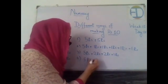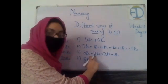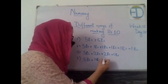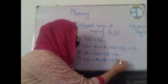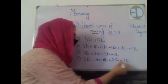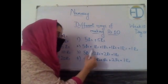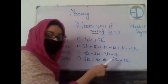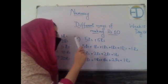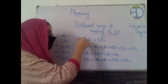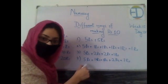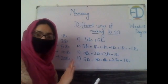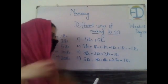The fourth combination: one coin of five rupees, one coin of two rupees, and three coins of one rupee — five plus two plus one plus one plus one equals ten. Note this is different from the third combination because here we have more one-rupee coins instead of two two-rupee coins. We are now done with all combinations that include a five-rupee coin.